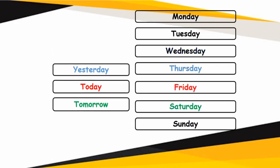If today is Friday — both of them are red in color, today and Friday — so today is Friday. Yesterday it was blue in color. Before Friday, which day comes? Thursday. And after Friday, which day comes? Green in color, which will match with tomorrow — Saturday. So if today is Friday, yesterday it was Thursday and tomorrow it will be Saturday.